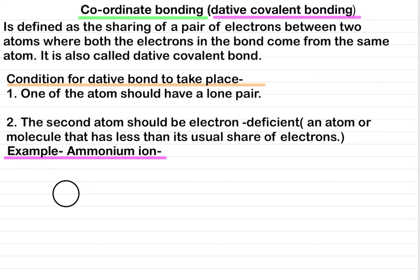Let's draw the structure of ammonia. We have three hydrogen atoms, each with one electron, and nitrogen in the center with five electrons — one, two, three, four, and five. This gives us the dot-cross structure of ammonia.